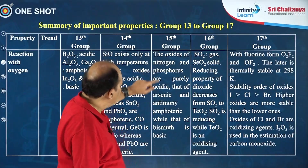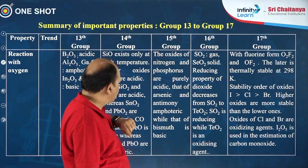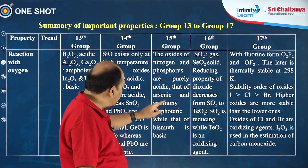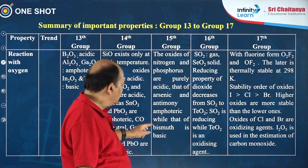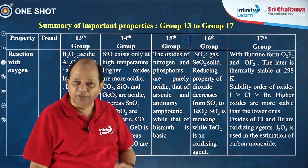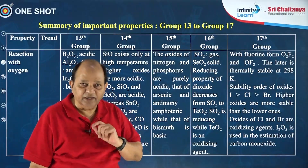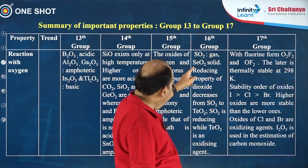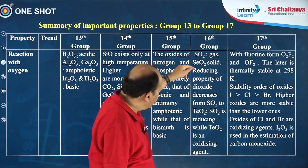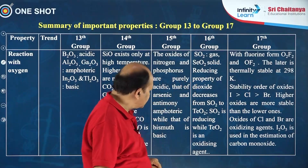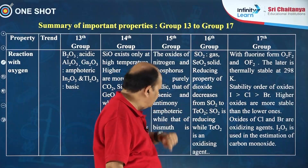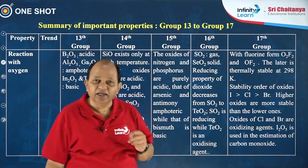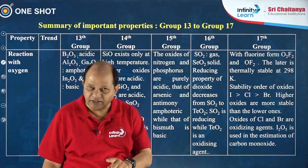Concerning group 15, the oxides of nitrogen and phosphorus are purely acidic, those of arsenic and antimony are amphoteric, while that of bismuth is basic because it is metallic in nature. Concerning group 16, SO2 is a gas and SiO2 is a solid. The reducing property of dioxides decreases from SO2 to TeO2; SO2 is a reducing agent while TeO2 is an oxidizing agent.